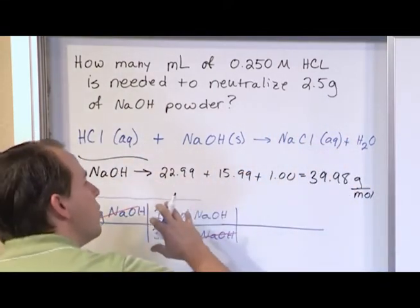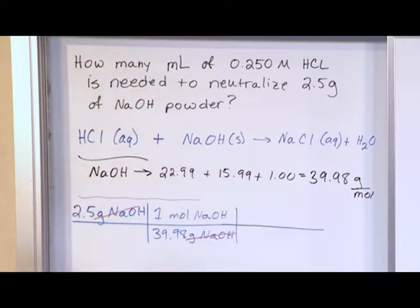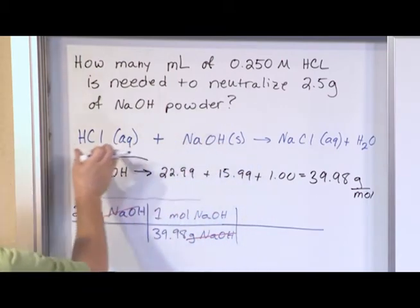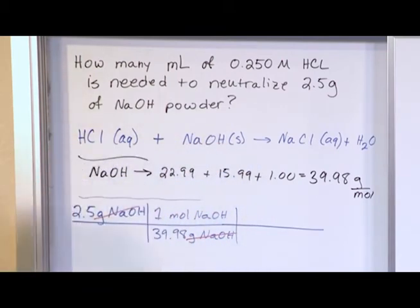So if I start out with so many moles of NaOH, how do I calculate how many moles of HCl is going to be required? Well, for every 1 mole of this, I'm going to need 1 mole of HCl. So I can use the chemical reaction to figure that out.